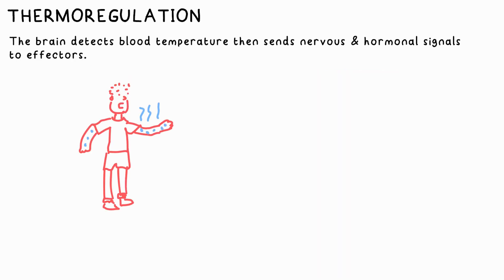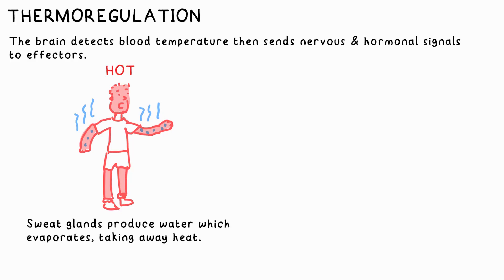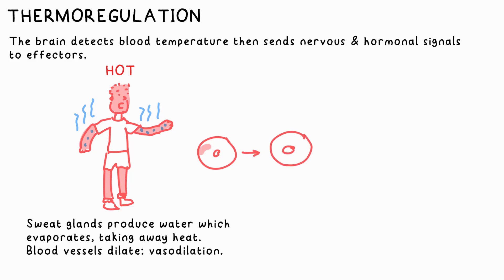Thermoregulation is your body controlling its internal temperature by the brain sensing blood temperature, then sending nervous and hormonal signals to various effectors around your body in order that your body loses heat to its surroundings more slowly or quickly. For example, if you're too hot, sweat glands in your skin cause water to cover the surface — it evaporates, taking heat away from your body quickly. Blood vessels also dilate, meaning widen, to increase blood flow to the skin and increase the rate of heat loss. We call this vasodilation.